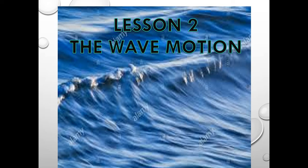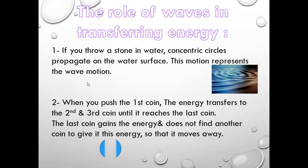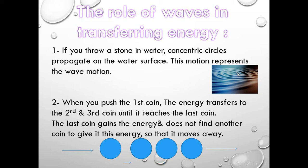Welcome back to our second lesson on wave motion. We said in lesson one that wave motion is a type of oscillatory motion, as it repeats regularly in equal periods of time around its rest point. When we discuss wave motion, we can simply describe the transferring of energy. For example, if you throw a stone in water, we can see concentric circles which propagate across the water surface.